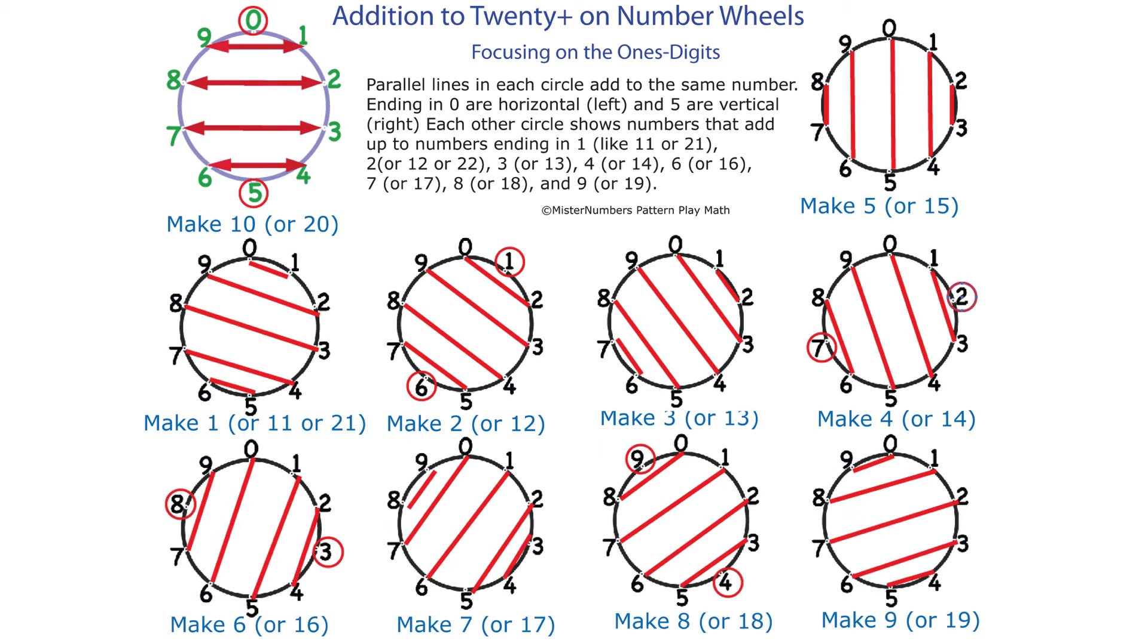The fourth reason that number wheels make learning easier is that kids see visually that the red lines connect pairs of numbers. It doesn't make any difference which number comes first. This is their learning the commutative principle.